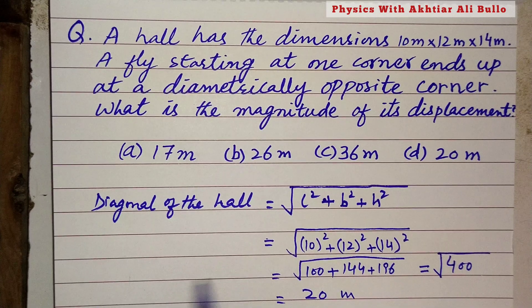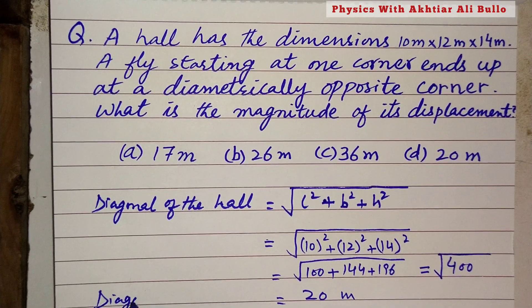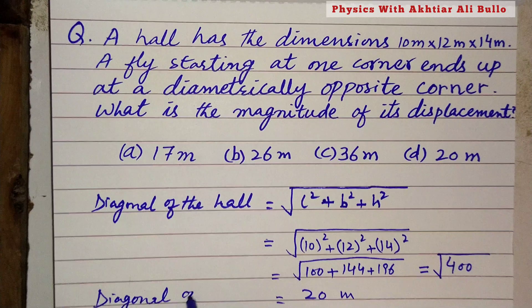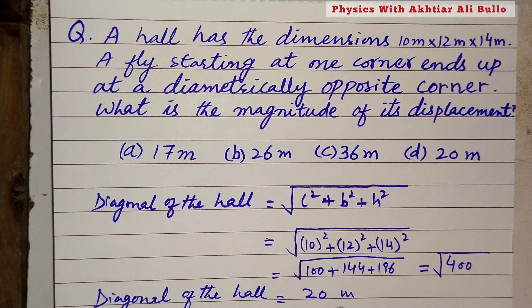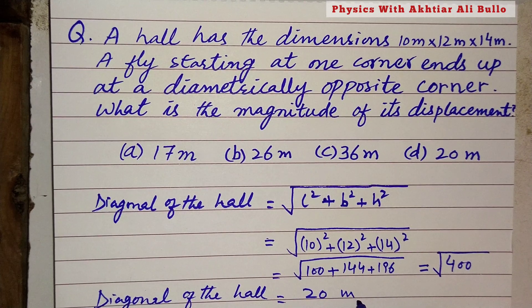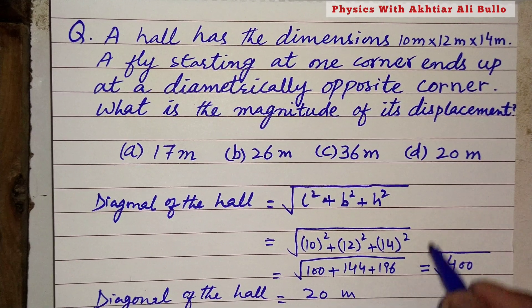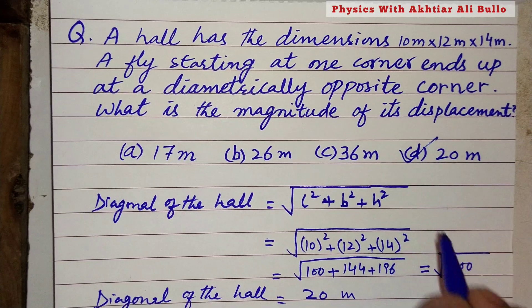The diagonal of the hall is obtained as 20 meters. So the correct option is (d) 20 meters.